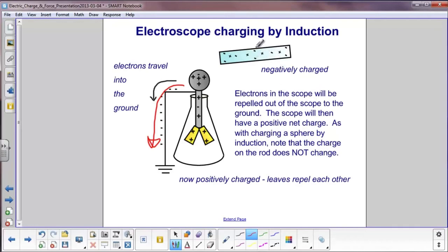And again, the same case here. Whatever charge was here in the beginning is still what we have at the end. The reason this is now a positively charged electroscope is excess electrons went to ground.